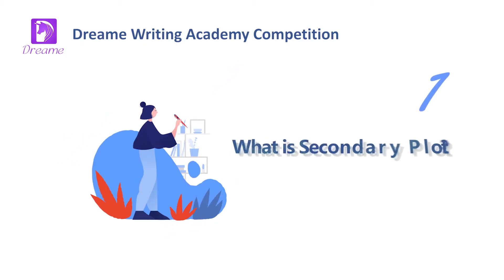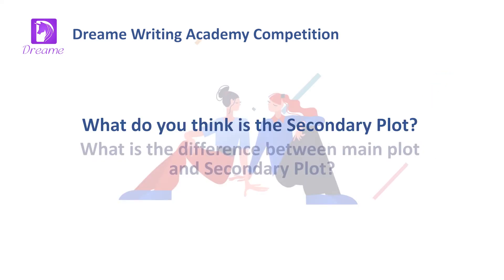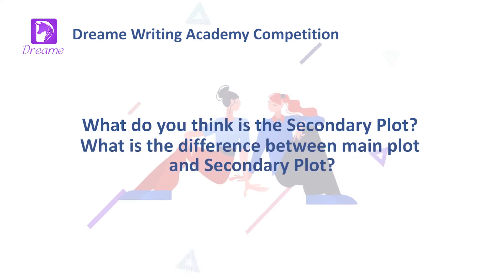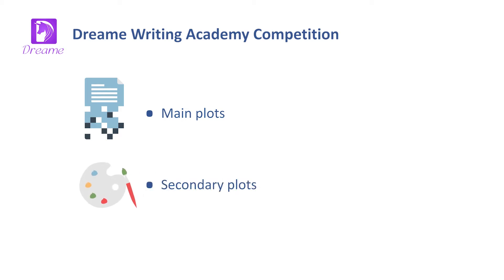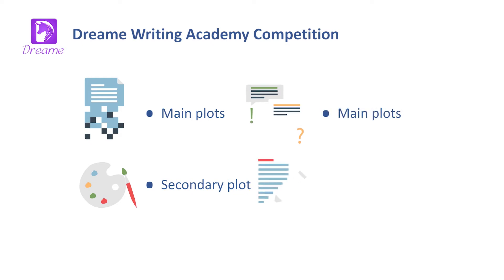What is a secondary plot, and what is the difference between the main plot and the secondary plot? Main plots are drafts of drawings that portray the shape of a frame, and secondary plots are the colors that add vivid details to the drawings. A synopsis provides the writer with the knowledge they need to design their story.